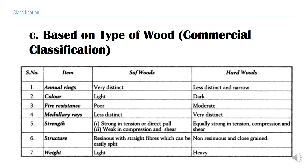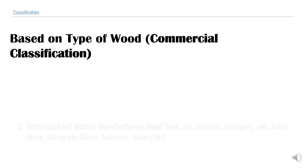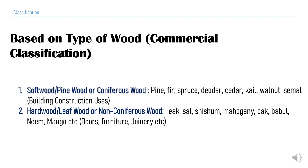Regarding structure, softwood is resinous with straight fibers which can be easily split, while hardwood is non-resinous and closely grained. In terms of weight, softwood is light while hardwood is heavy. Examples of softwood (pinewood/coniferous wood) include pine, spruce, deodar, cedar, kail, walnut, and semal. Examples of hardwood (leafwood/non-coniferous wood) include teak, sal, shisham, mahogany, oak, babul, neem, and mango, used for doors, furniture, and joinery.